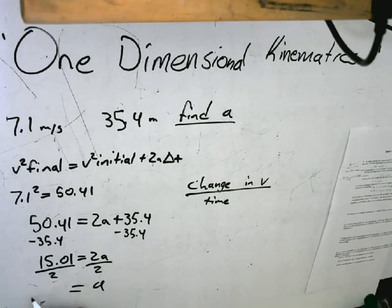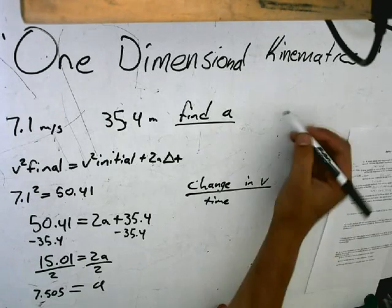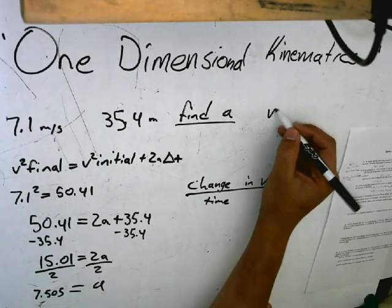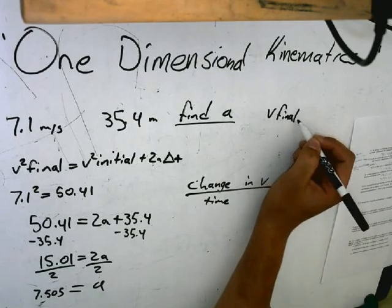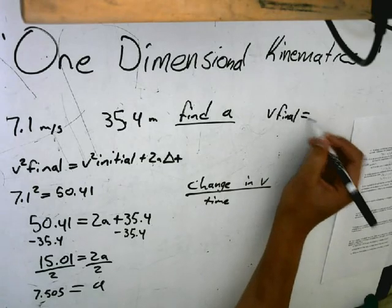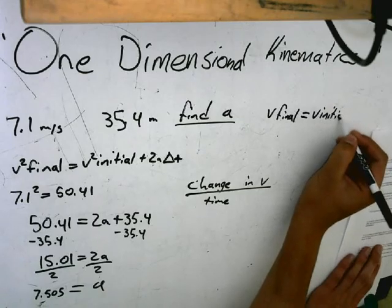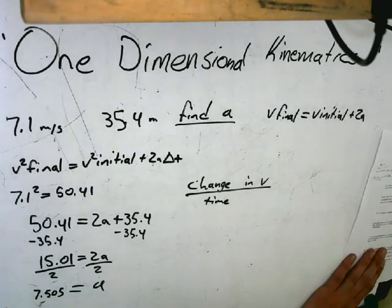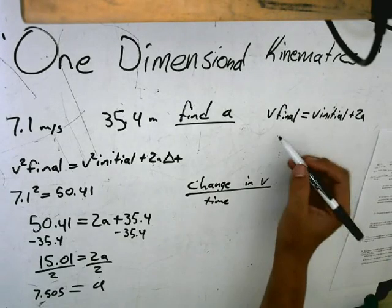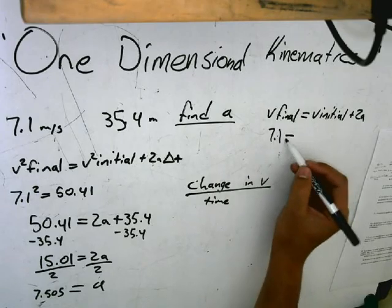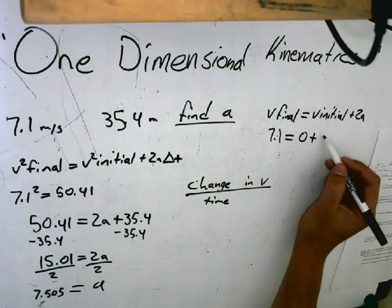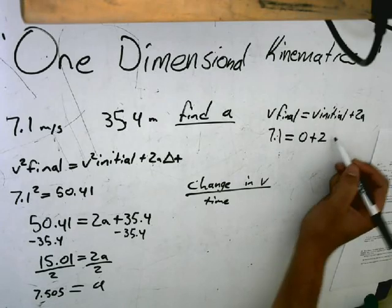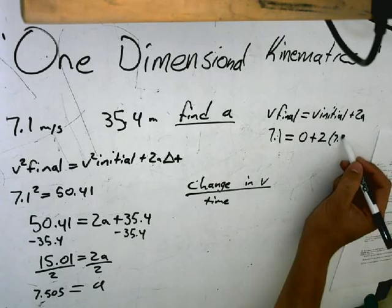Now to find the time, we have to take v final which equals v initial plus 2a. Now we plug in the numbers: v final which is 7.1 equals 0 plus 2 times 7.505. So 7.1 equals 15.01.